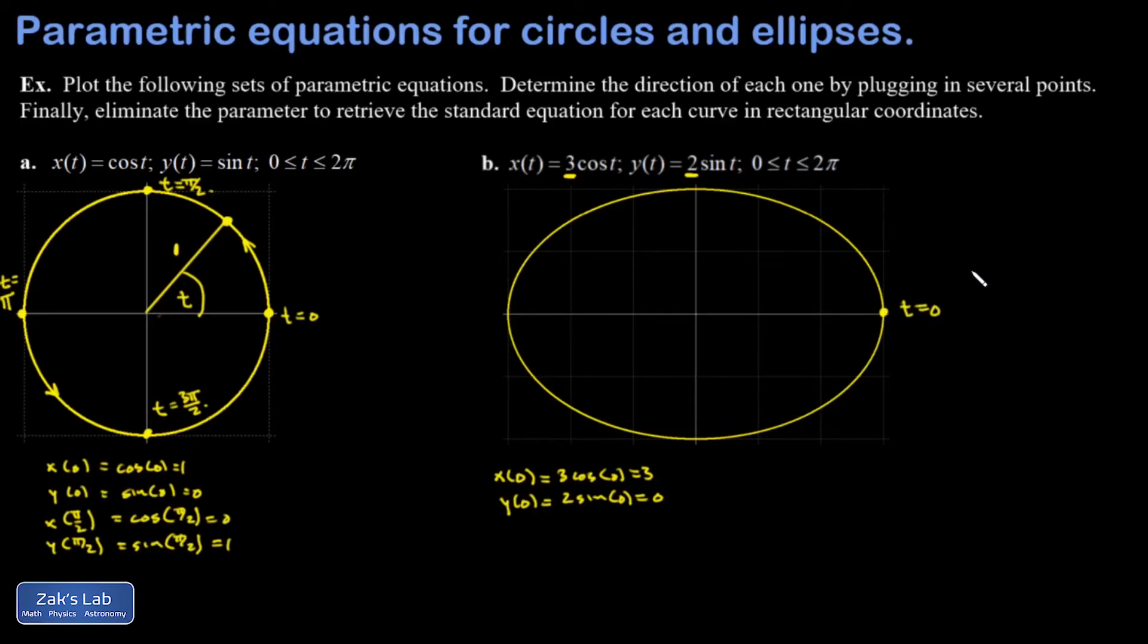All I need is one more point nearby in order to determine the direction, so I'm going to use pi over two. x of pi over two is zero because the cosine of pi over two is zero. y of pi over two is two because the sine of pi over two is one. I end up at the top of the ellipse when t is equal to pi over two.